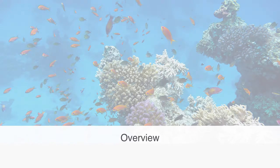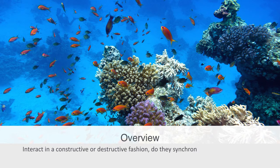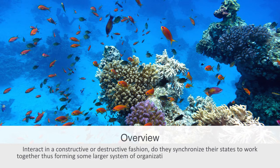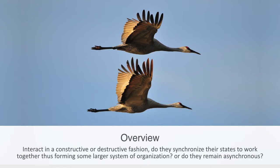We've previously talked about ecosystems as networks through which resources and energy are flowing, as the components within this network form some interdependent system. A primary question of interest will be how do any two or more elements within the network interact — do they interact in a constructive or destructive fashion? Do they synchronize their states to work together, forming some larger system of organization, or do they remain asynchronous?